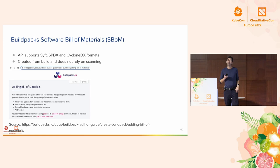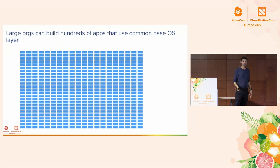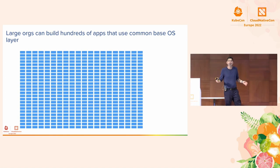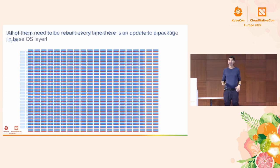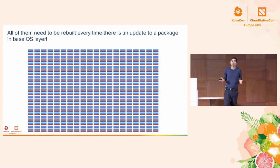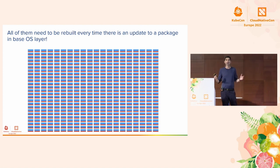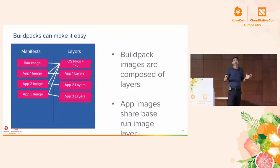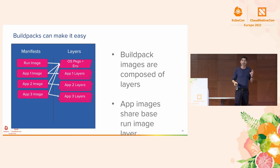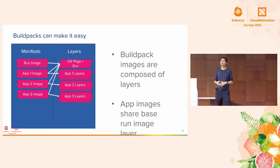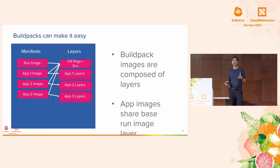The rebasing capability in Buildpacks is key because large organizations can have hundreds of apps that use a common base OS layer, and if one package in that base OS layer changes, all the applications need to be rebuilt. Say all these applications use logging and there's a base logging package — say log4j. That means every time an update happens to the base package, the image needs to be rebuilt.